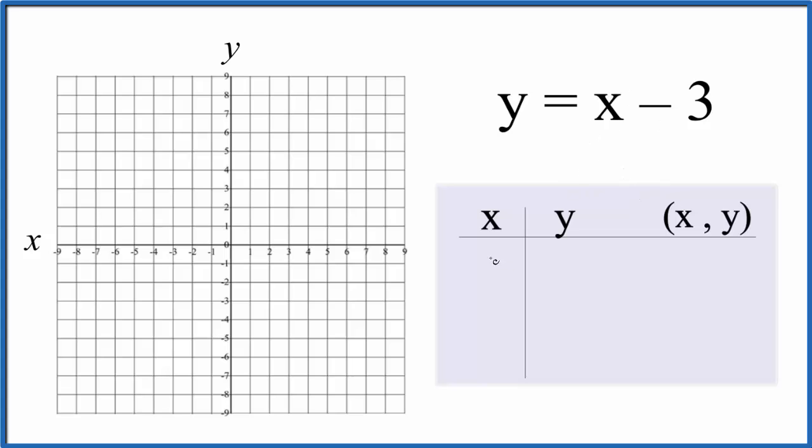So I'd like to put a 0 in for x first, because I know that's going to show up on my graph. So 0 minus 3 gives us minus 3. If we put 1, 1 minus 3, that's minus 2. And if we put minus 1, minus 1 and minus 3, that gives us minus 4.